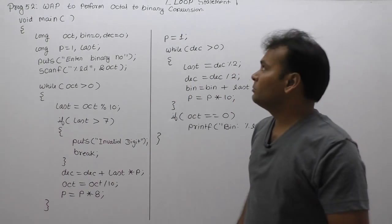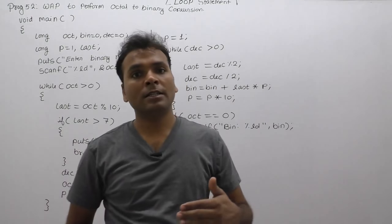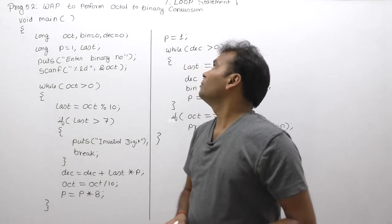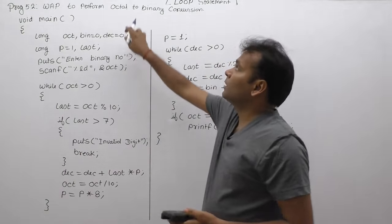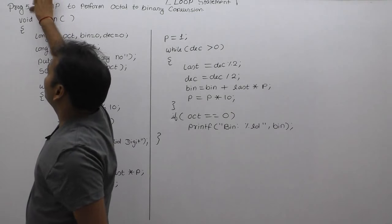Next conversion program, again here we want to perform octal to binary conversion. Previous case we performed binary to octal conversion, but here we want to perform binary to octal to binary conversion. This program I think 53.